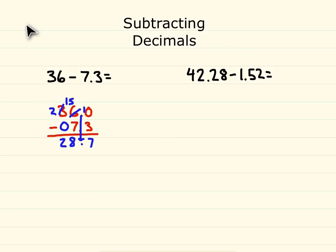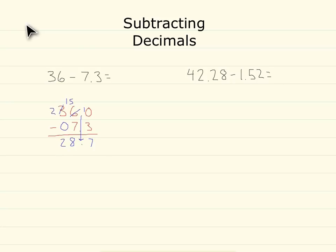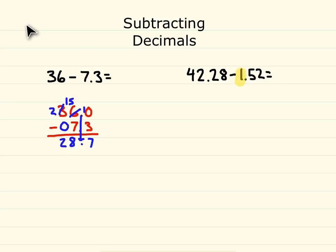Our 1 in the ones place, we need to take that away from our 2 in the ones place. Our 5 in the tenths place needs to be taken away from our 2 in the tenths place, and our 2 in the hundredths place needs to be taken away from our 8 in the hundredths place. Let's go ahead and line up our numbers to see how this works out.